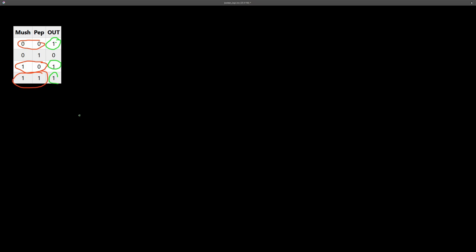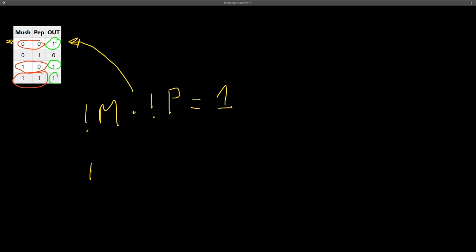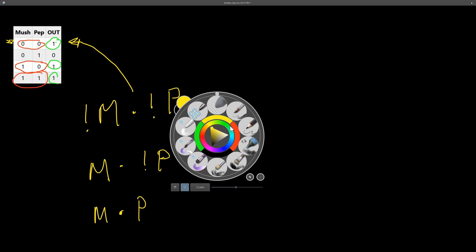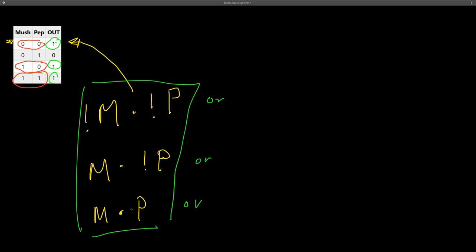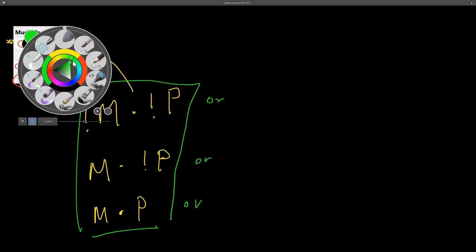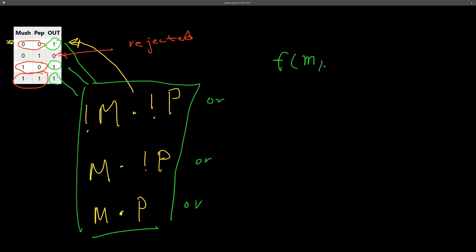We look at the patterns that have an output of one. Where they have a zero, we run them through a NOT, then AND them together. The first pattern, zero zero: both are zero, so it's NOT M AND NOT P — that should produce a one for this row only. The next pattern, one zero: there's a zero for P, so it's M AND NOT P. The last pattern, one one: we just do M AND P. Finally, we OR all three together. To write it as a mathematical function, replace the ORs with a plus sign.